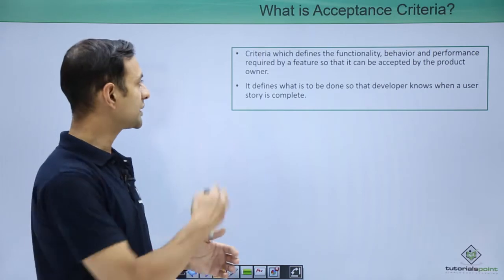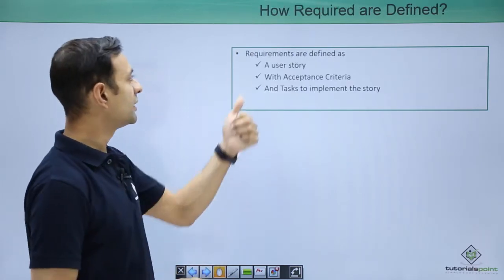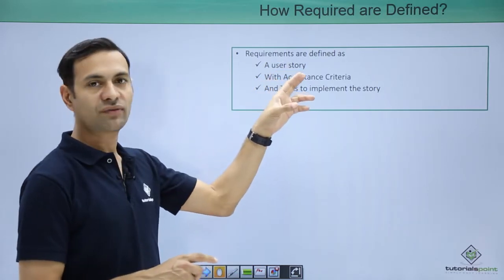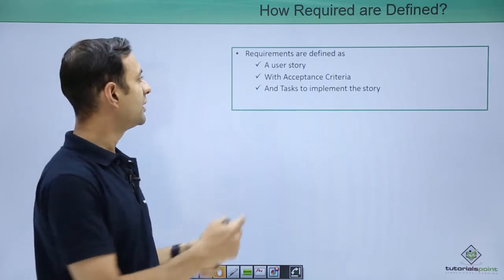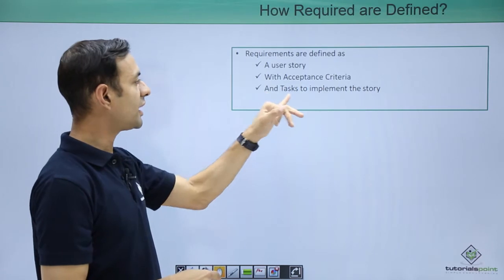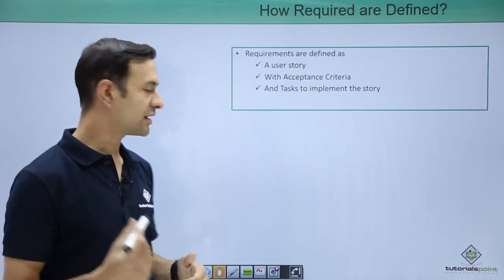Acceptance criteria is basically a set of three values. Requirements can be defined using three things: a user story with acceptance criteria and tasks to implement the story. This represents your broader requirement.